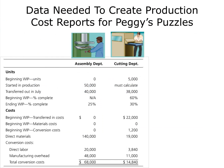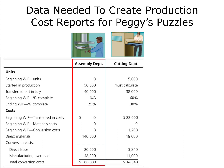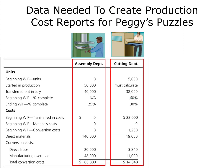We just completed the production cost report for the assembly department. Now, to complete the production cost report for the cutting department, we will need this data. Remember, the assembly department glues the puzzle picture to cardboard, then transfers the glued puzzle boards to the cutting department to be cut and then placed in the box.